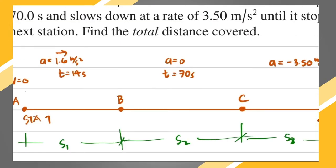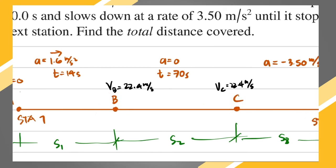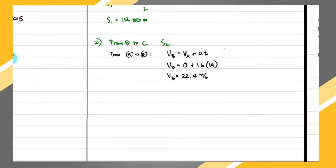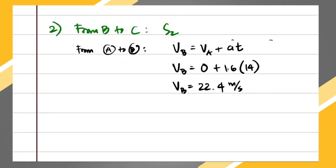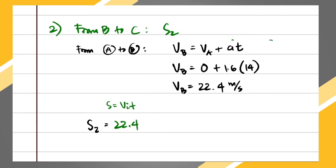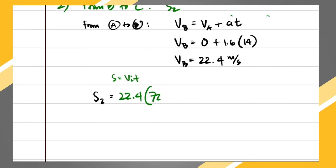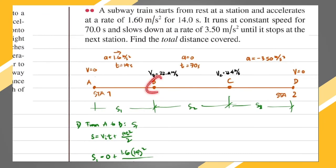To solve for distance s2 from B to C, using s = vi·t + (a·t²)/2 with zero acceleration: s2 = v·t = 22.4 × 70 = 1568 meters. So the distance covered in the second condition from B to C is 1568 meters.